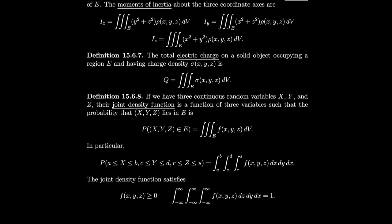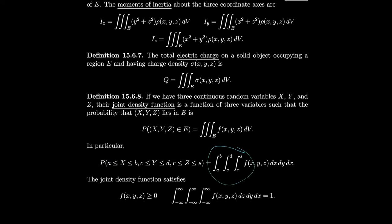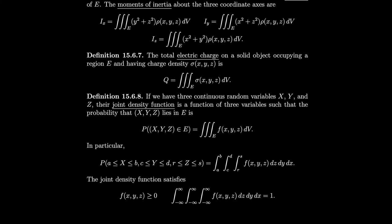The total electric charge uses the same formula but with charge density σ instead of ρ. For probability with three continuous random variables x, y, z having joint density function f, the probability that (x, y, z) lies in region E is the triple integral over E of f. The joint density function is always ≥ 0 and its integral over all space equals 1.